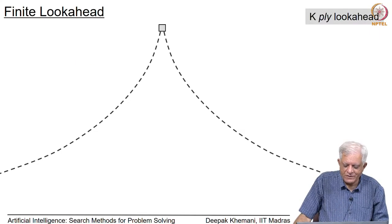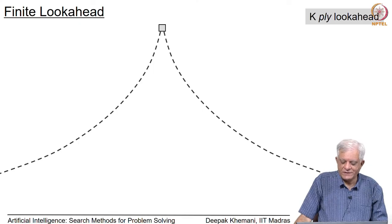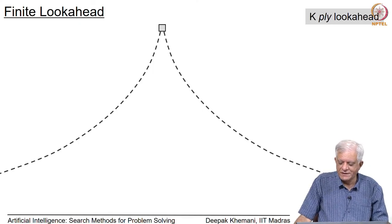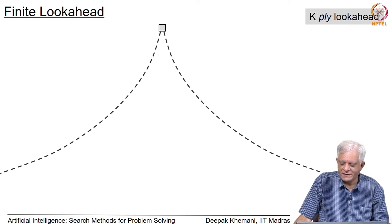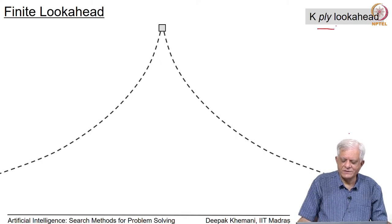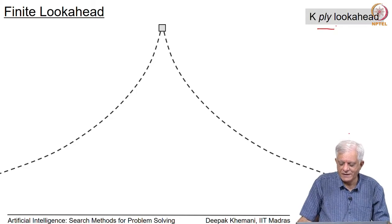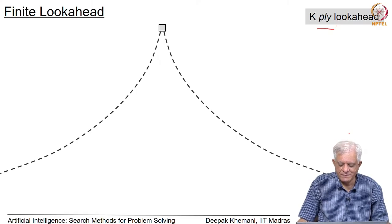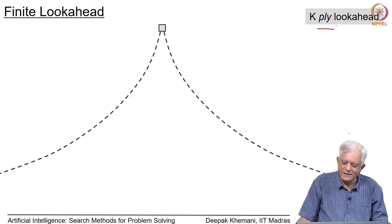So what do we do? All game-playing programs do a limited look-ahead. If this is a game tree growing exponentially, we do a look-ahead called a k-ply look-ahead. A ply is a term used in game-playing parlance for a move. A k-ply look-ahead means you are looking at k moves ahead — you make a move, your opponent makes a move, you make a move, and so on, looking only up to k moves ahead.